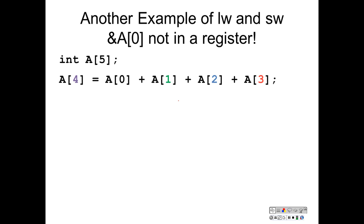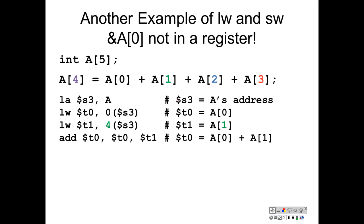Here's another example. This time we're not going to assume anything about the register allocation yet. We have a five-element array A again, and we're going to calculate the summation of A[0] plus A[1] plus A[2] plus A[3] and store the result in A[4]. The first thing to do is to get the address of A. In MIPS, the LA instruction is provided by the assembler — it is a pseudo instruction. It stands for load address. It gets the address of the label A, associated with a variable, into register $s3. Now $s3 will equal the address of A, and we can access elements of the array by offsetting from that base address.